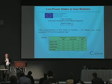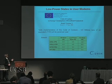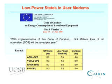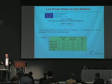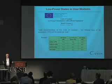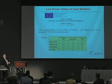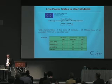Since so much energy is consumed in the access network, it's important to improve its energy efficiency. A large amount of that energy is in the modems in the home. The European Commission recently put out a code of conduct for energy consumption of broadband equipment, mandating that home modems have a low-power sleep state when no data is being transmitted, with mandated power consumption levels that will greatly reduce access network energy use.